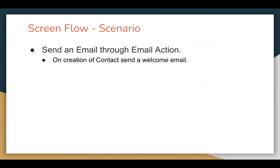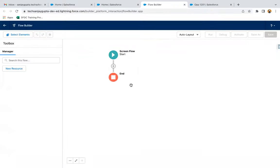I will be sending an email through the email action. The requirement is that whenever a contact record is created, on the contact we have an email field. If that email field is populated, then we need to send a welcome email to that entered email. I'm jumping to a developer edition org and here I'm going to create a screen flow. Through the screen, we will be receiving contact information, and then when the contact record is created, we will be sending an email.